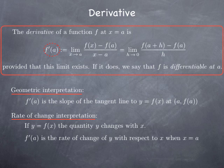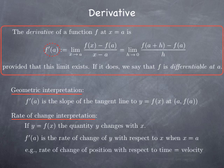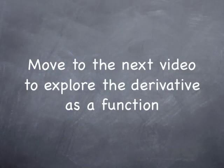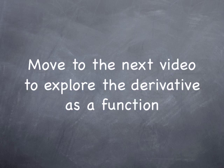The particular case we have looked at is where the variable x is time and the function f, as a function of t, is the position. Then the rate of change of the position with respect to time is simply velocity. And we have seen that instantaneous velocity is obtained as a derivative of the position function. Now let's move to the next video so that we can take a look at the properties of the derivative when we consider it as a function.